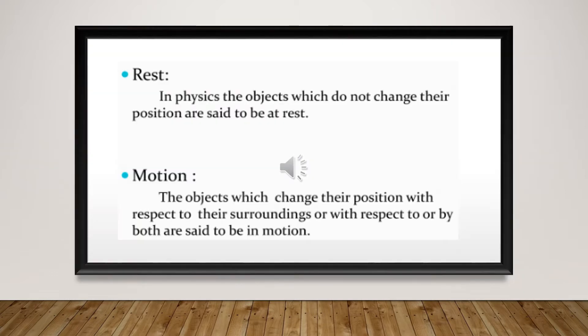Let's begin with our definition of rest and motion. In physics, the objects which do not change their position are said to be at rest. If an object is not changing its position with respect to its surrounding, it is said to be in the state of rest. Whereas the objects which change their position with respect to their surrounding are said to be in the state of motion.